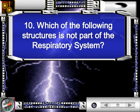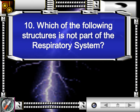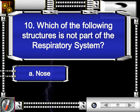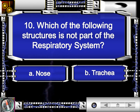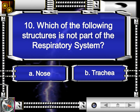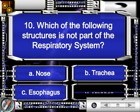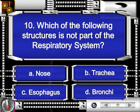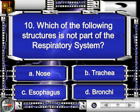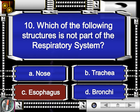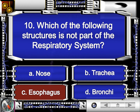Number 10. Which of the following structures is not part of the respiratory system? Is it letter A, nose? Letter B, trachea. Letter C, esophagus. Or letter D, bronchi. The answer is letter C, esophagus.